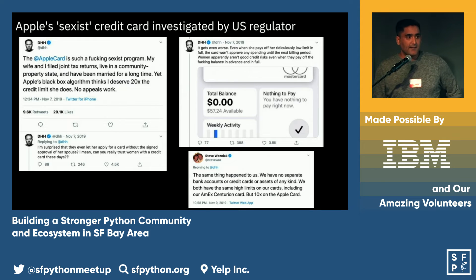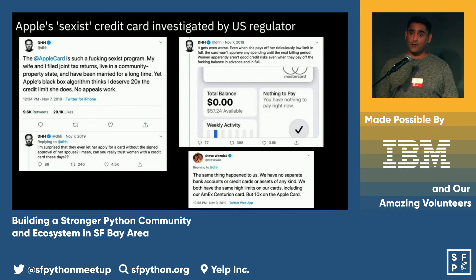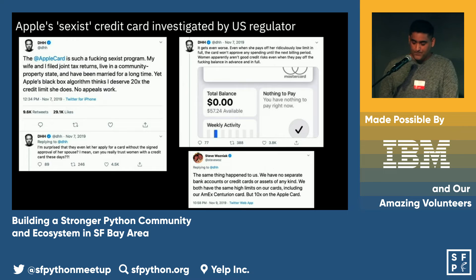This was not in the slide — I just added it recently. This is the creator of Ruby on Rails complaining that his wife got a significantly lower credit limit than himself from Apple Card. Again, this is just one example and doesn't prove their system is discriminating against women, but it's enough to start an investigation. The point being: it's a very, very relevant topic.